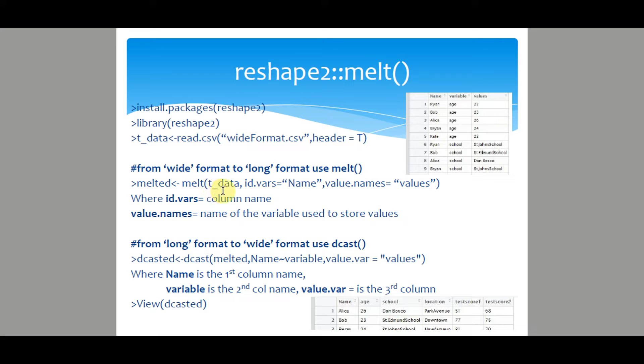Where T underscore data is the R object containing the data, ID vars is the column name, and value names is equal to name of the variable that is the column name used to store the values. View the data, you will see it is transformed into long format.